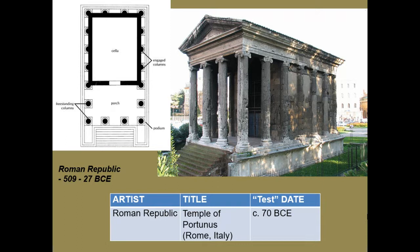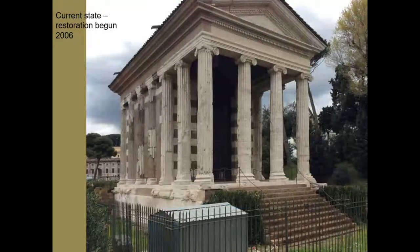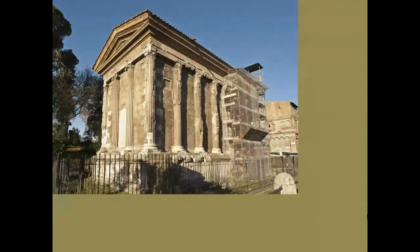You can see that it uses the Ionic order, which is much more common and elegant, and we see it quite frequently in Roman design. This is the current restored state of the temple itself.